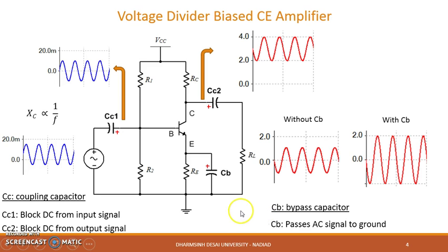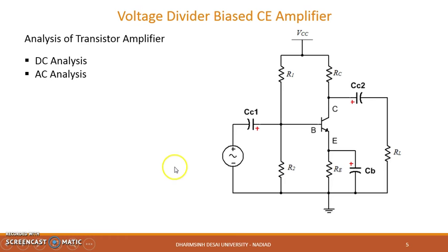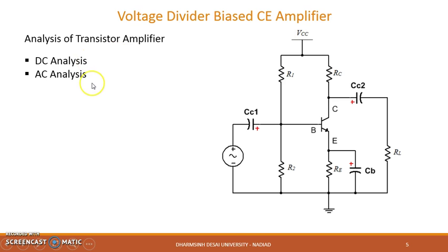This capacitor also helps to make the emitter terminal an AC ground. Now, analysis of a transistor amplifier circuit is mainly divided into two parts: DC analysis and AC analysis. In this session, our concern is DC analysis.